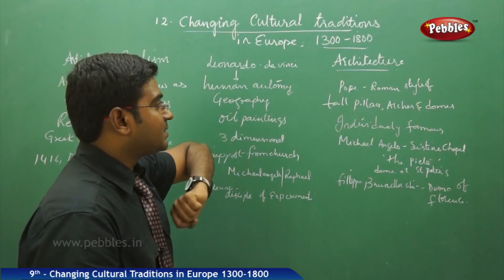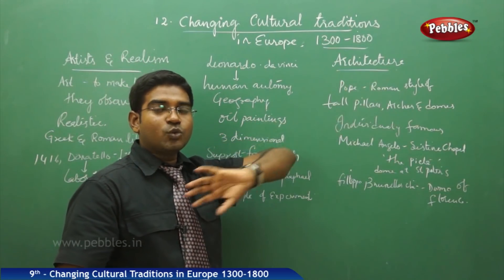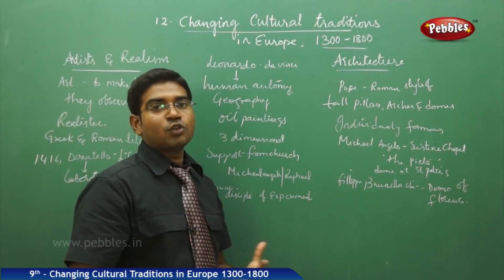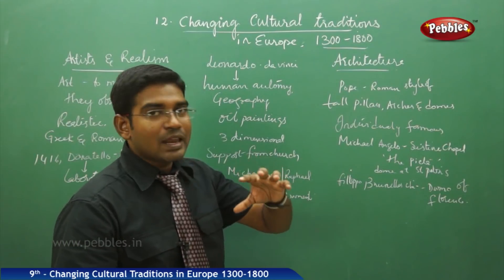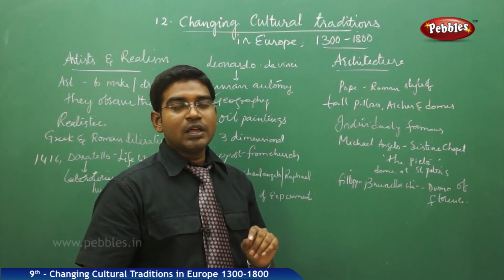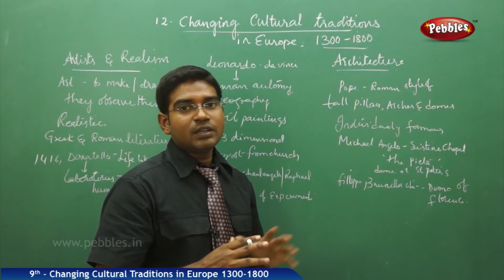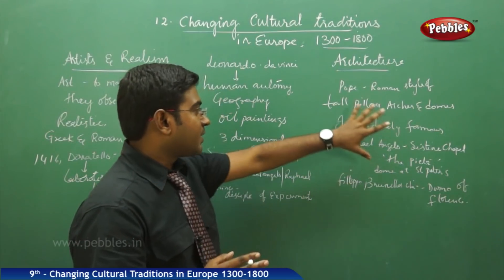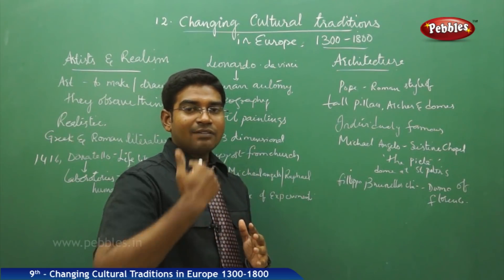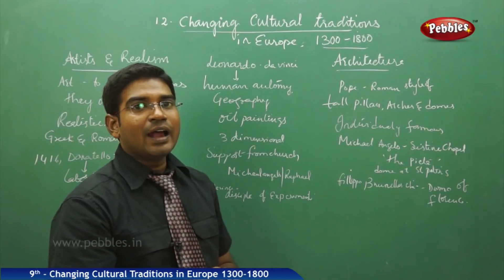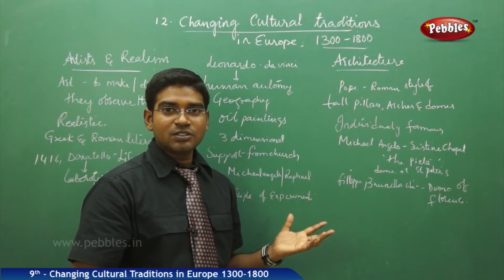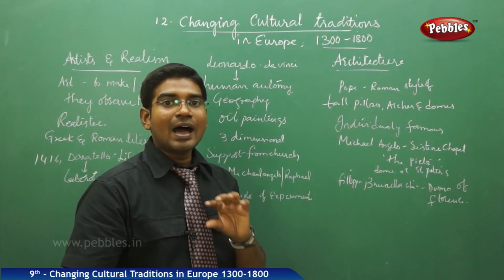When we look at how architecture developed, the Pope of Rome started to encourage people in the later part of the 14th century to study the ruins of the Roman style and culture — tall pillars, arches, and domes, which are the dominant symbols of Roman construction. They studied it very clearly and started to rebuild the culture. It became a change in trend: earlier these people were employed and paid by the churches, but now they became famous for their art.